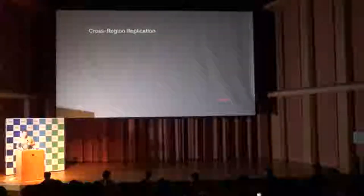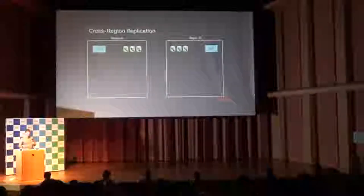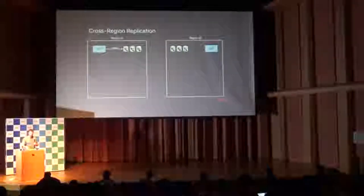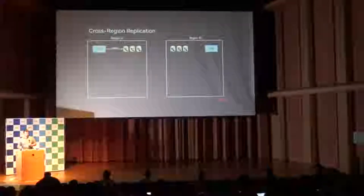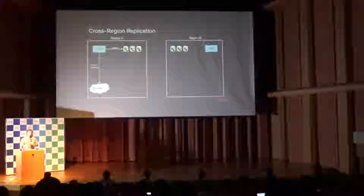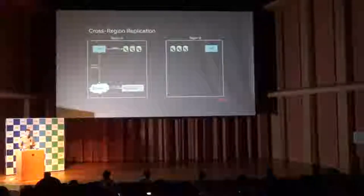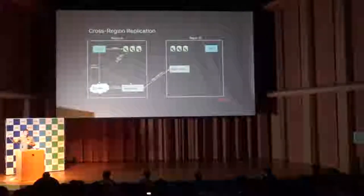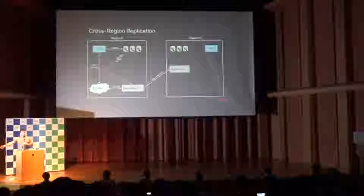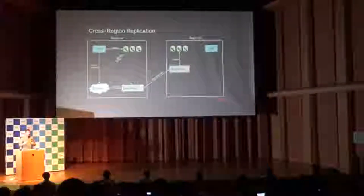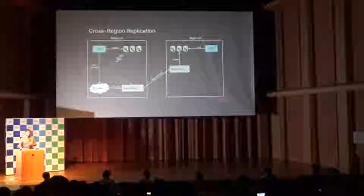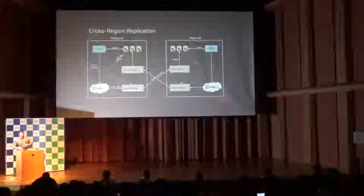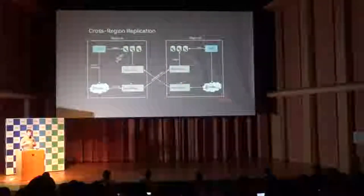For cross-region replication, we have the same deployment in every region with an application and a cache cluster in each. The application changes something in a cache, and we send this metadata to a Kafka topic. Our system called a replication relay reads that Kafka topic and gets the data if needed, writes it across the ocean to our replication proxy in the other region, which changes the cache there — making that change visible to the application in that region. For three regions, this happens in all six directions for every cache that we want replication for.